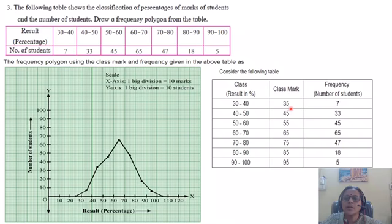Now, the next point is 35, 7. So, this is 35 in between 30 to 40, 35 and this is 7. Then the next is 45, 33. This is 45 and this is 33. Mark this point. 45, 33.